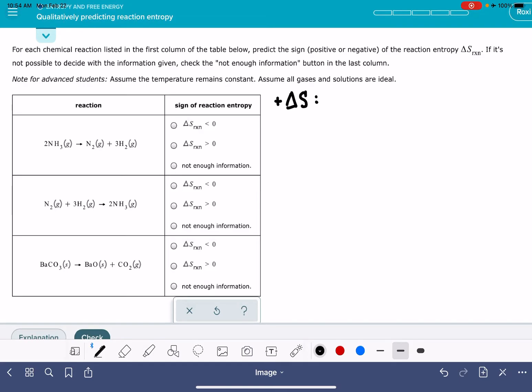A positive delta S means that we are going to have more types, not really just about the quantity, but it's about the types, more types of molecules on the right side of the reaction arrow.